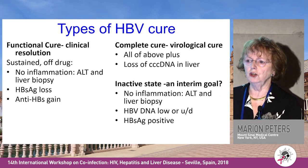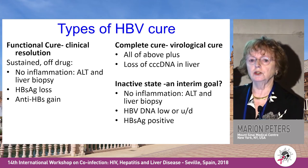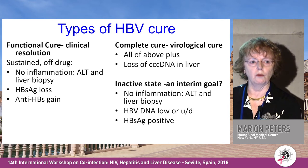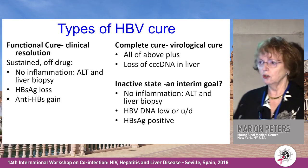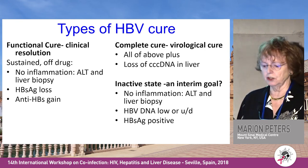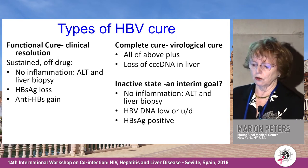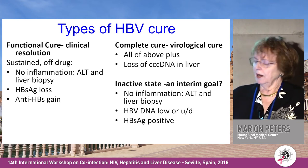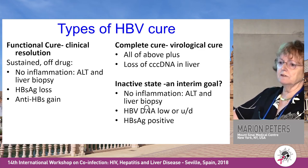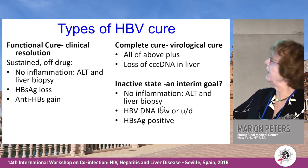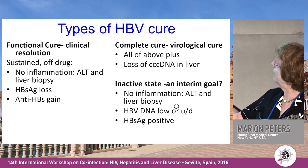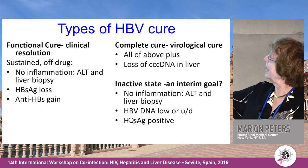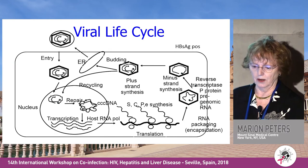When we talk about cure, a functional cure is what you get after acute infection: sustained off drug, no inflammation, normal ALT, normal liver biopsy, loss of surface antigen and acquisition of surface antibody. A complete or virologic cure would be all of that plus loss of CCC DNA in the liver. We should also think about development of the inactive state — loss of inflammation, normal liver biopsy, low or undetectable DNA, even in those who are surface antigen positive — which we can achieve with nucleoside analogues and interferon.